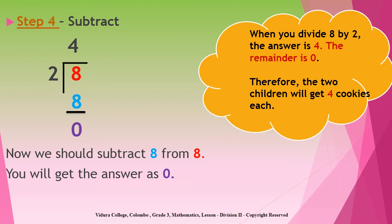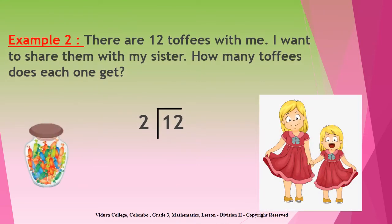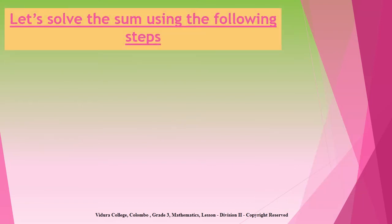So children, those two kids will get four cookies each when divided equally. Okay children, shall we do another example? Okay children, now we are going to solve the above sum.